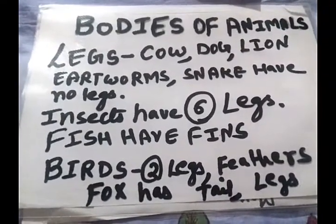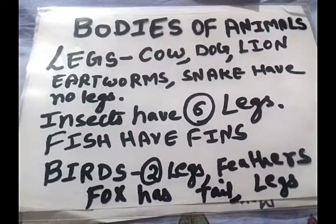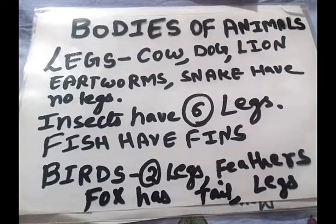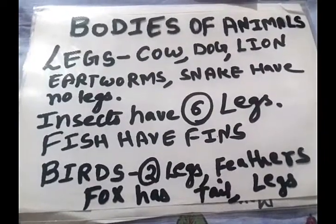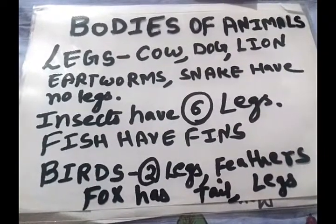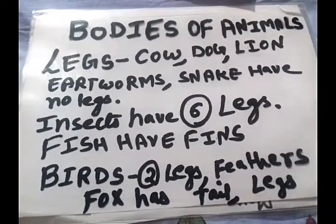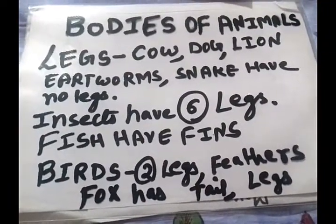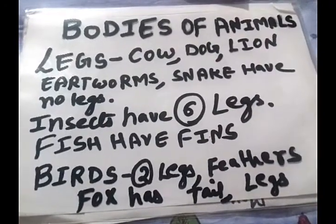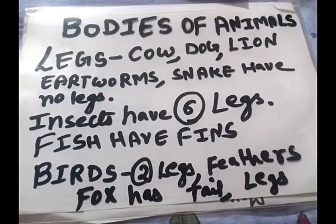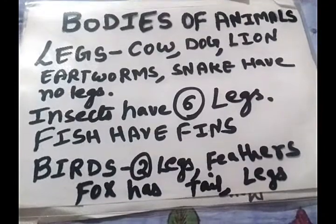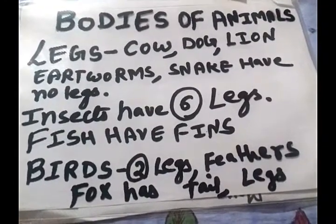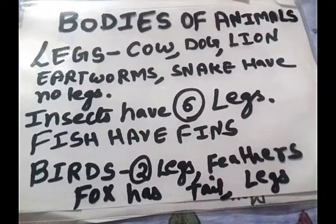Recap: cow, dog, and lion have legs; earthworm and snake have no legs. Insects have six legs, like butterfly and cockroach. Fish have fins which help them to swim, and fish do not have legs. Birds have two legs, and feathers and wings are also present on their body. Fox has a tail and also legs.